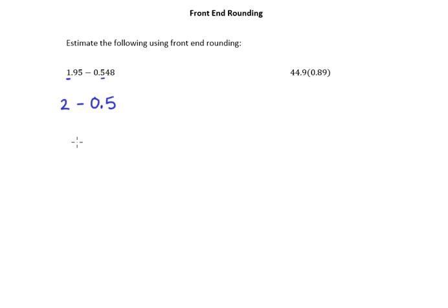So I'll go ahead and set up my vertical subtraction here. Two minus 0.5. And of course I need something up here since I'm subtracting five from nothing at this point. So I put a zero there and then realize I need to do a little borrowing. So ten minus five is five. One minus zero is one. So my answer of course is 1.5.